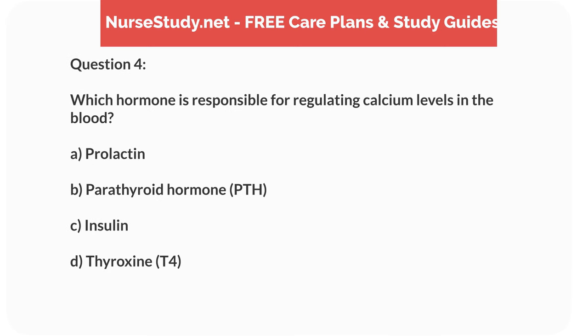Question 4. Which hormone is responsible for regulating calcium levels in the blood? A. Prolactin. B. Parathyroid hormone (PTH). C. Insulin. D. Thyroxine (T4).